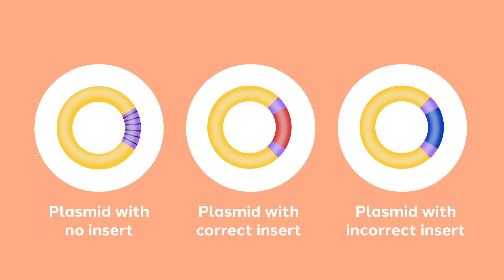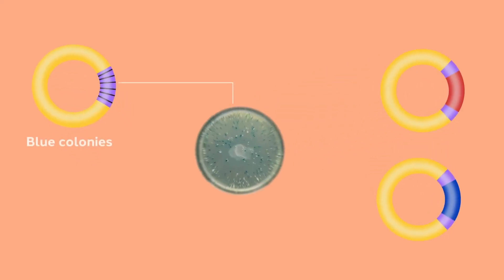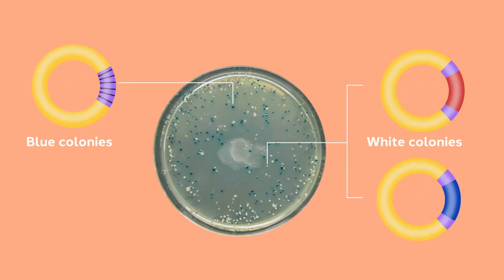In short, a re-circularized empty vector will contain an intact lac Z-alpha fragment, and bacteria carrying this plasmid can turn blue. In contrast, if an insert has disrupted the lac Z-alpha fragment, it is no longer functional, and these colonies therefore remain white. The plate on this slide shows examples of colonies carrying empty vector, which are the blue colonies, and colonies carrying a vector which has acquired a fragment within the multi-cloning site — these are the white colonies. Depending on your cloning strategy, you might not perform this screen, but many plasmids carry the lac Z-alpha fragment to provide this option.